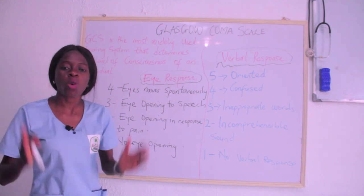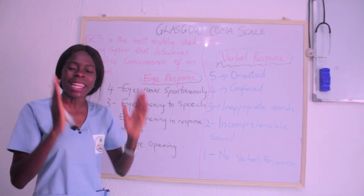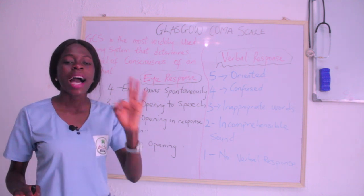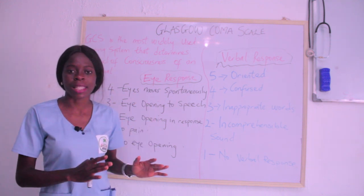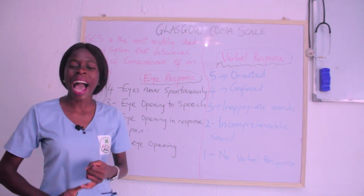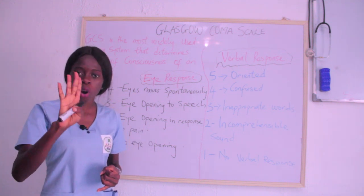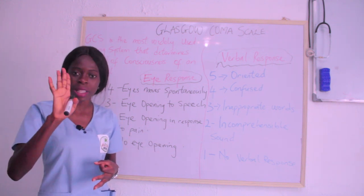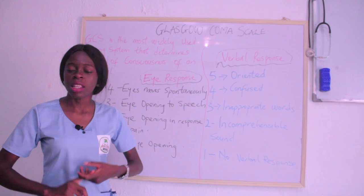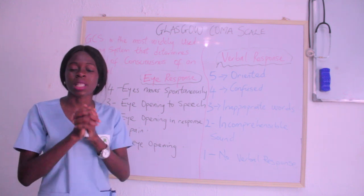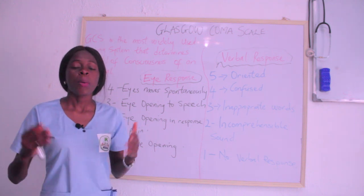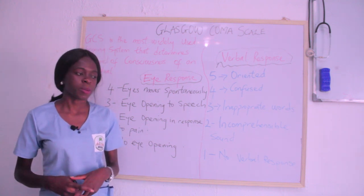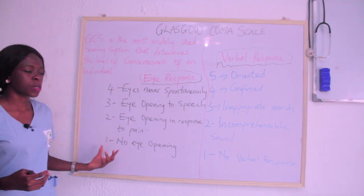The Glasgow Coma Scale is the most widely used scoring system when it comes to assessing the level of consciousness. On the Glasgow Coma Scale we have three different parts: the first is the Eye Response, which has four grades; the second is the Verbal Response, which has five grades; and the last is the Motor Response, which has six grades.